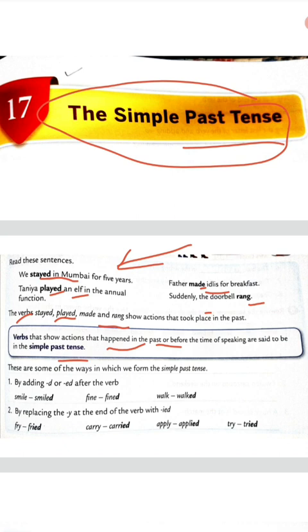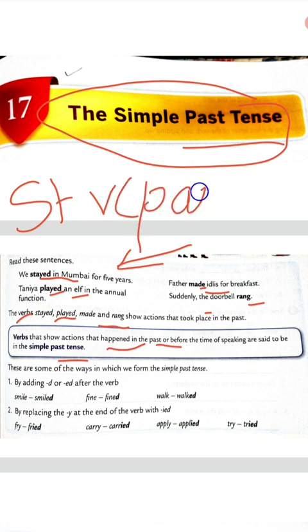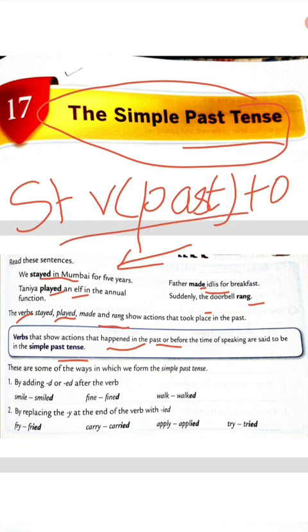So how do we write the simple past tense? कैसे लिखते हैं? We will write: subject plus verb in past form. Verb को past form में लिखते हैं, plus the object. तो इसमें हम verb को past form में कैसे बनाएंगे? Let's see some of the rules.